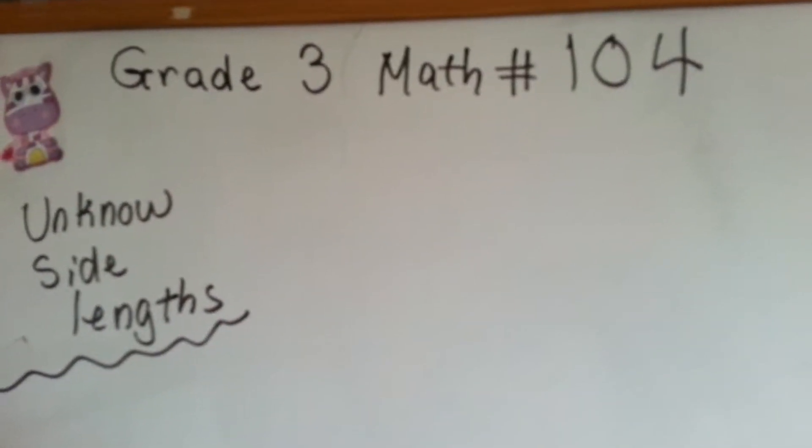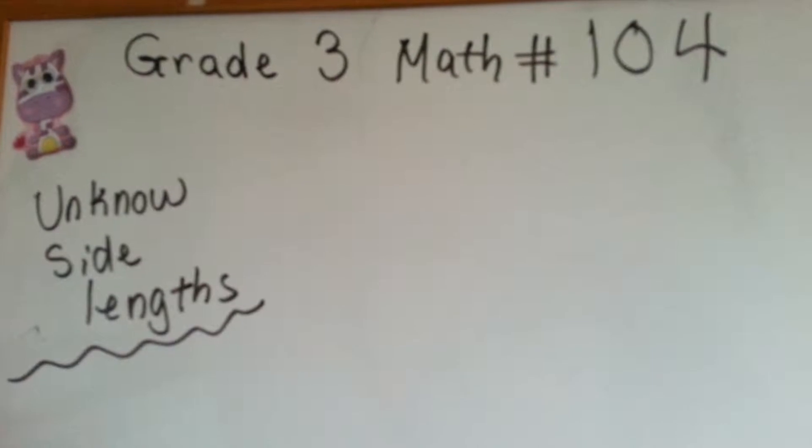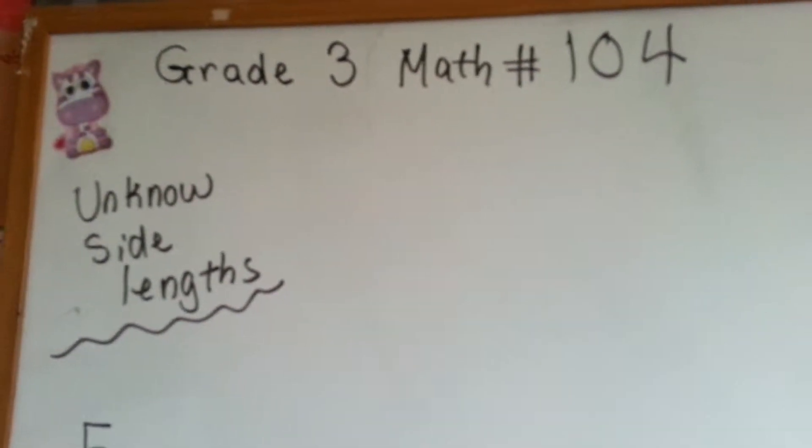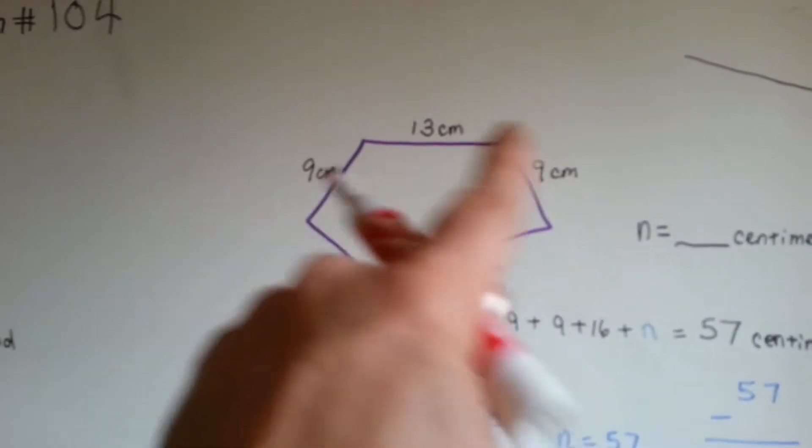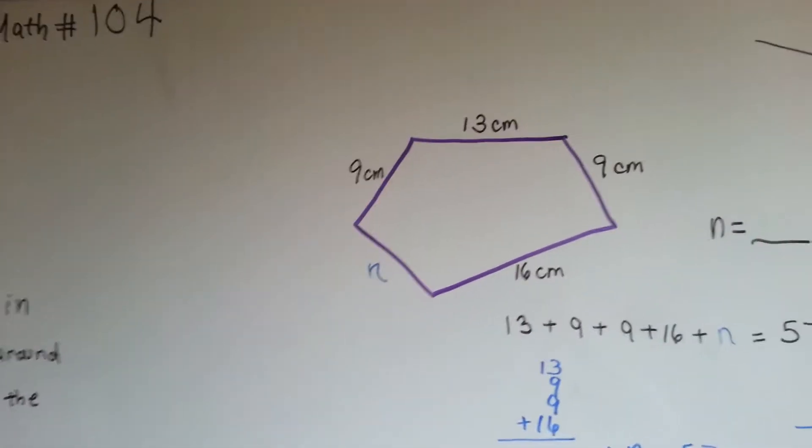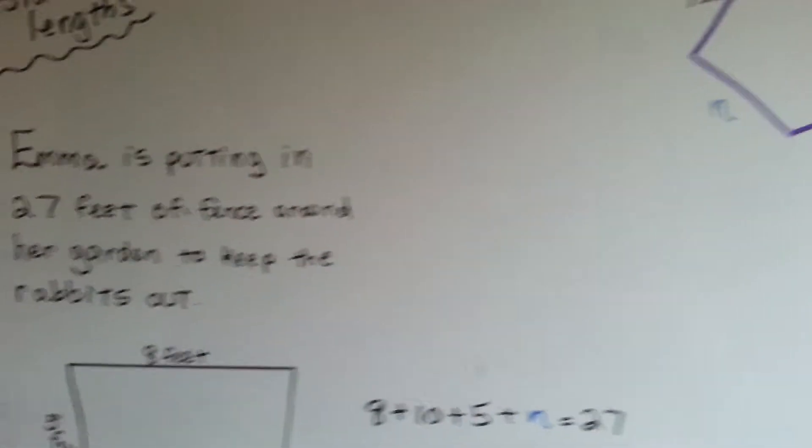Grade 3 math number 104, unknown side lengths. That means we know the lengths of all the sides except for one, maybe two. So let's see if we can figure this first one out here.